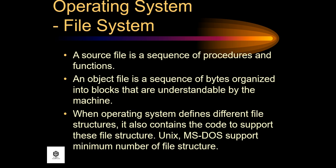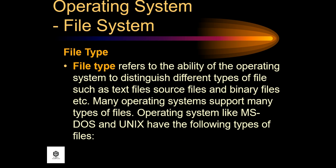When an operating system defines different file structures, it also contains the code functions of the file structure. Unix and MS-DOS support a minimum number of file structures. The file type refers to the ability of the operating system to distinguish different types of files such as text files, source files, and binary files. Operating systems like MS-DOS and Unix have the following types of files.